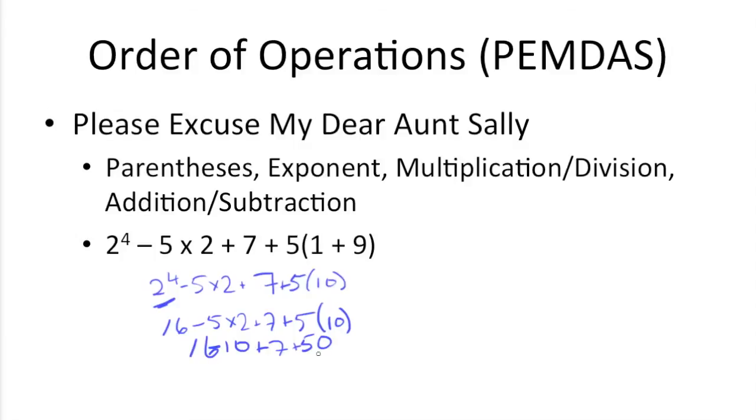Now we just have subtraction and addition left, so we can just go left to right. So 16 minus 10 is 6, plus 7, plus 50, which gets us 6 times 6 plus 7 is 13, plus 50 is 63.